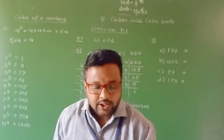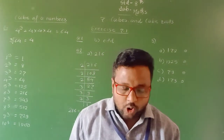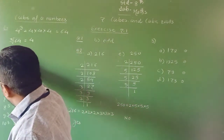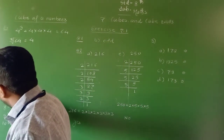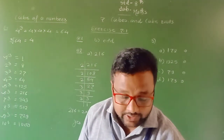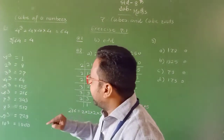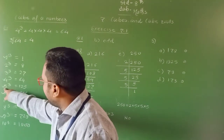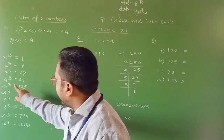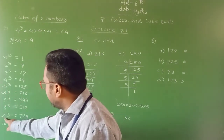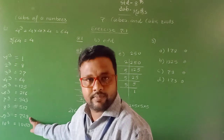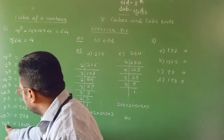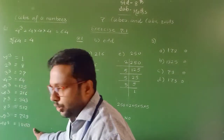The second property: cubes of numbers ending in the digits 1, 4, 5, 6, and 9 end with the same digit. So 1 cubed ends in 1, 4 cubed ends in 4, 5 cubed ends in 5, 6 cubed ends in 6, and 9 cubed ends in 9. Also, if the number ends in 0, its cube also ends in 0.